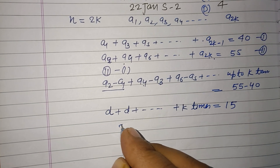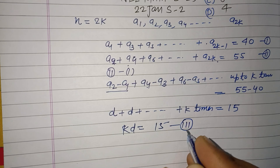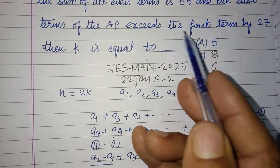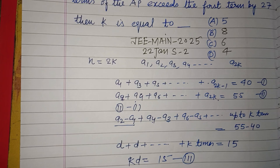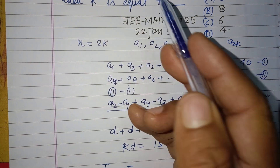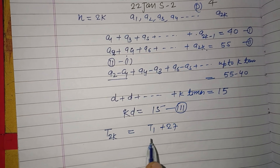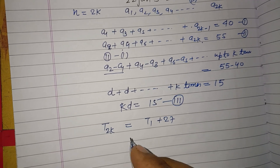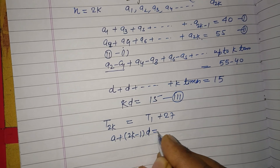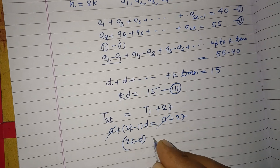Now the question states that the last term of the AP, which is t(2k), exceeds the first term t1 by 27. So if we add 27 to the first term, it equals the last term: a + (2k - 1)d = a + 27. The a's cancel, giving us (2k - 1)d = 27.